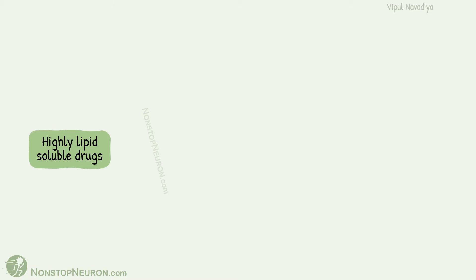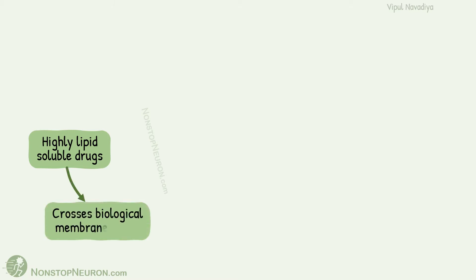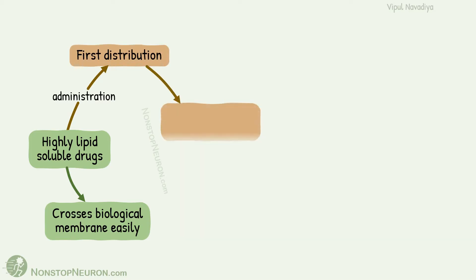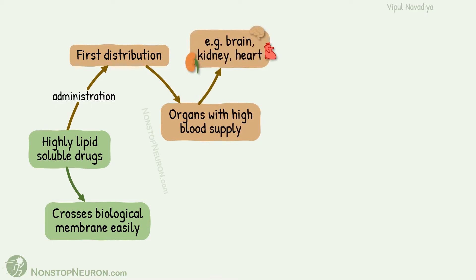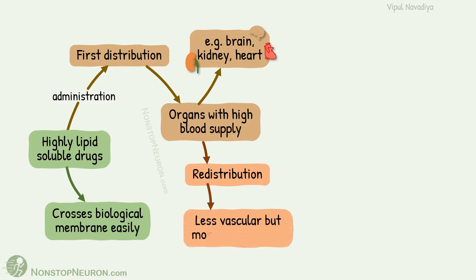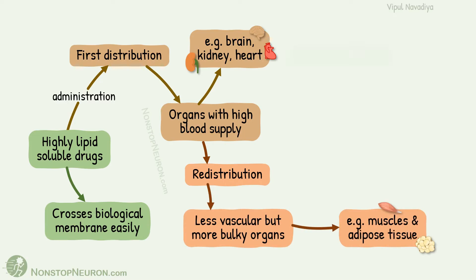This is seen with highly lipid-soluble drugs because lipid-soluble drugs cross the biological membranes easily. When you administer such a drug, it first gets distributed to organs with high blood supply — for example, brain, kidney, and heart. Being lipid-soluble, they diffuse back and get redistributed to less vascular but more bulky organs, for example, muscles and adipose tissue.